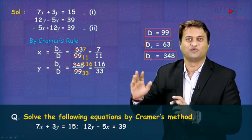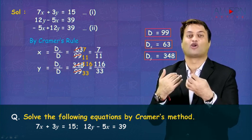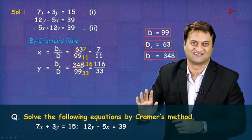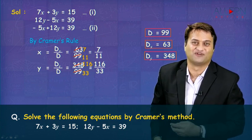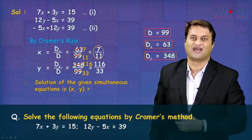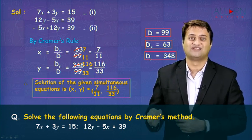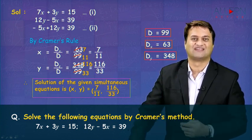So if in exam you get such answers 116 upon 33, it is not necessary that you are wrong or something. You get such answers. As far as this sum is concerned, we are getting 116 upon 33. So here we are getting the value of X as 7 upon 11 and we are getting the value of Y as 116 upon 33. As simple as that.